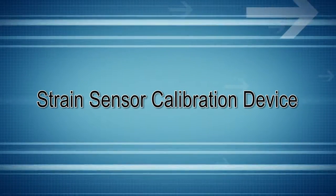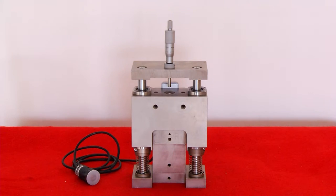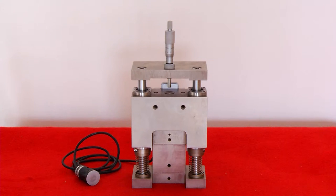Strain sensor calibration device uses grading ruler to calibrate strain sensors. It is highly precise and satisfies the strain sensor manufacturer's requirement for high precision calibration.